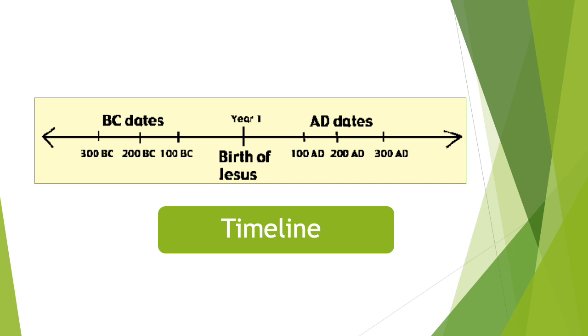When we draw a timeline we draw a straight arrow. In the middle we put the birth of Jesus and mark it year 1. On one side we put the AD dates and mark 100 AD, 200 AD, 300 AD and so on. On the other side we put the BC dates and mark 100 BC, 200 BC, 300 BC and so on. When we look at the timeline we can see that 300 BC happened before 200 BC, and in AD, 300 AD happens after 100 AD.